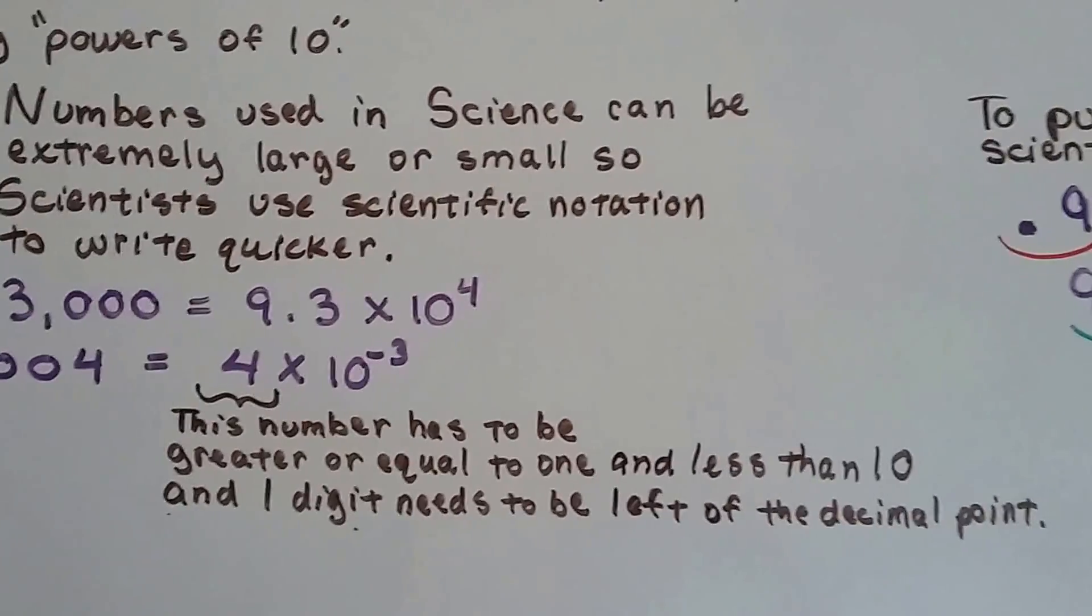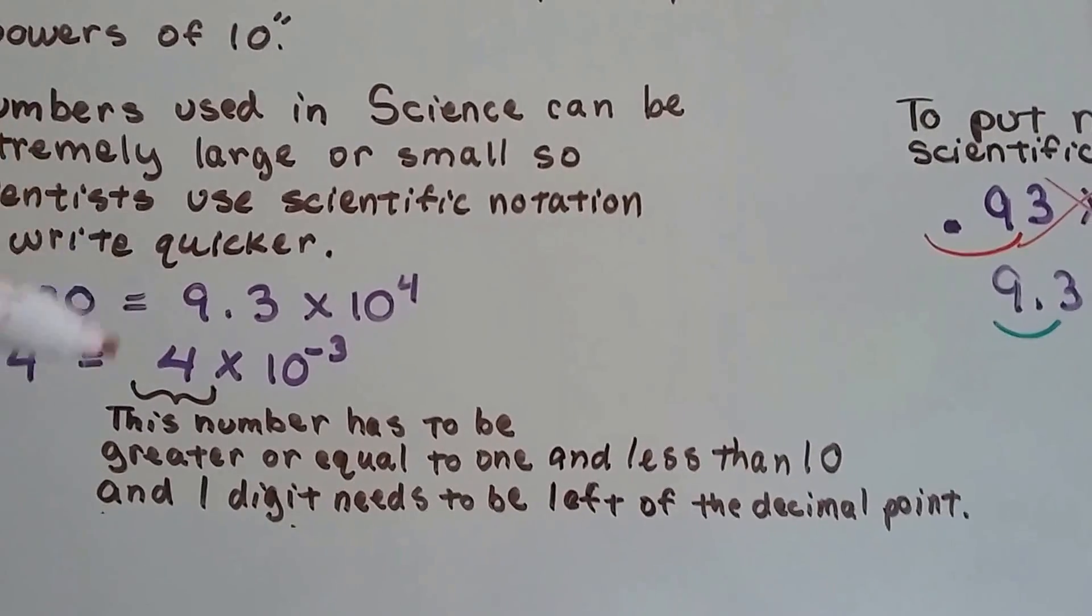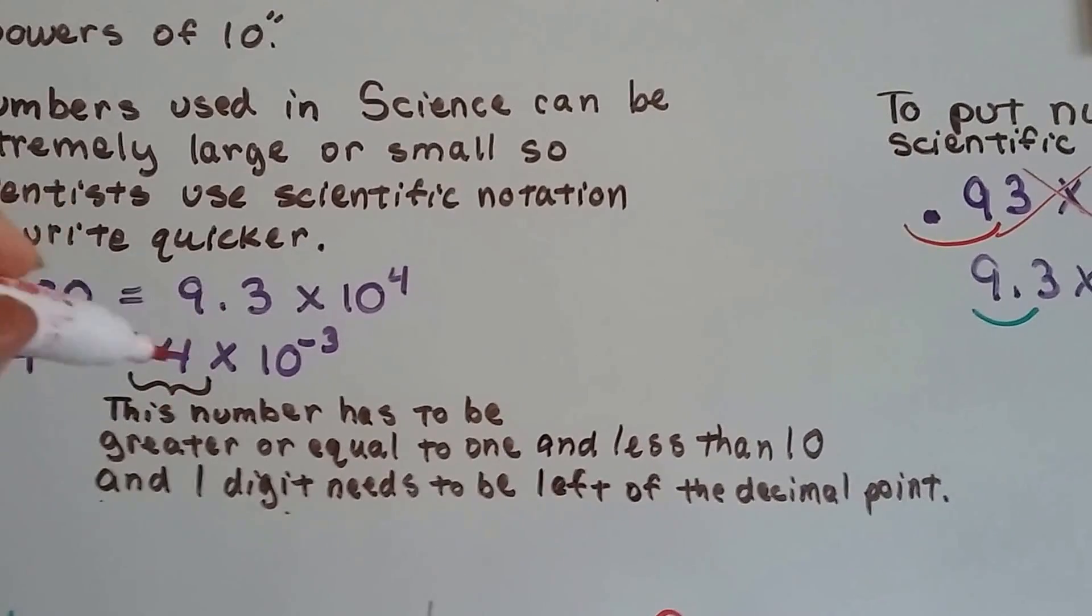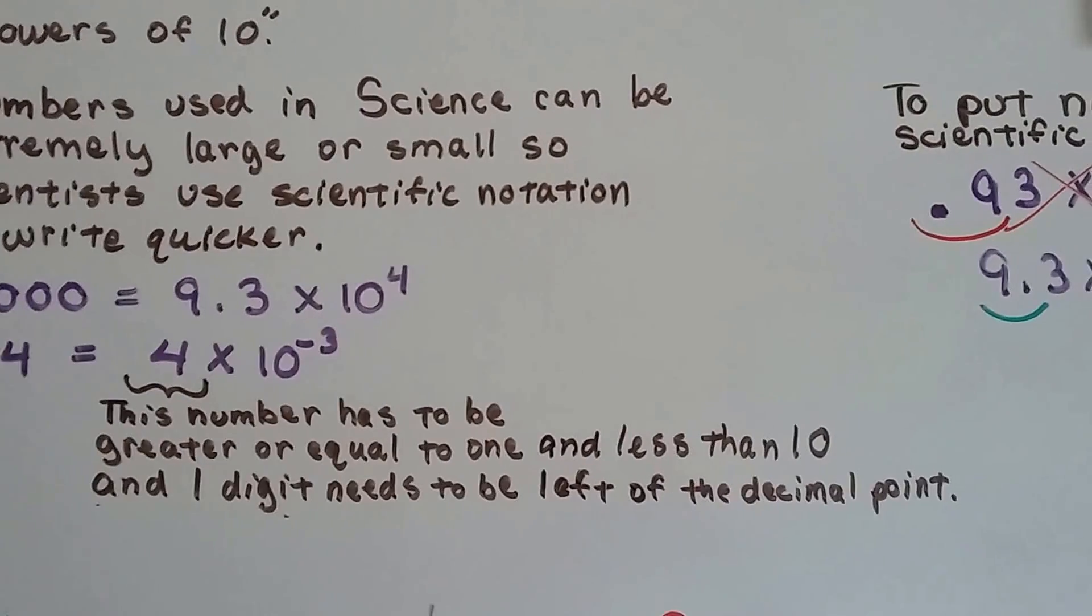This number, this multiplier in front of the power of 10, has to be greater than or equal to 1 and less than 10, and at least one digit needs to be in front of the decimal point.